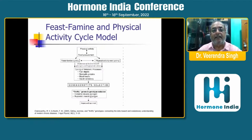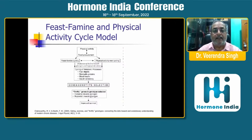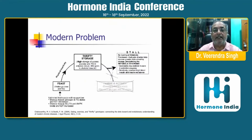Physical activity and food procurement were interrelated, giving rise to feast-famine cycles and physical activity-rest cycles. These two cycles drove metabolic processes — fuel depots, metabolic proteins, blood insulin, and insulin sensitivity — leading to gene and genotype selection, with thrifty genes selected to conserve and replenish muscle glycogen, enabling survival during famine.